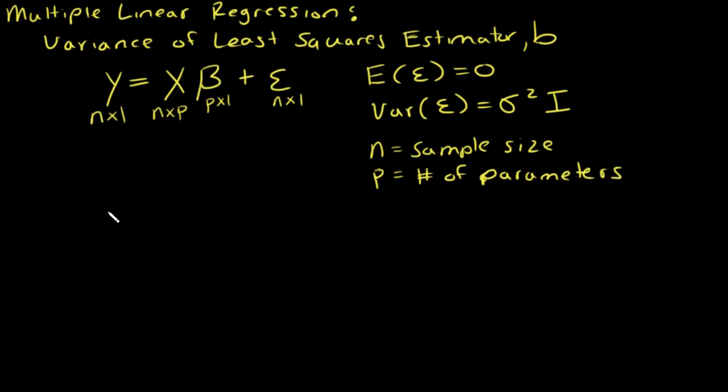I've previously shown that the least squares estimator of this beta is B, and B equals x transpose x inverse times x transpose y. So this is our least squares estimator of that beta there.